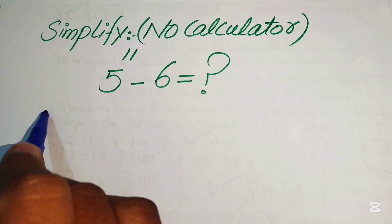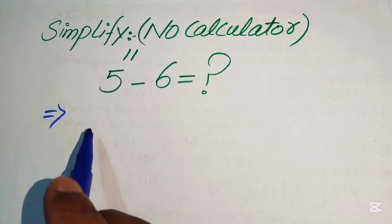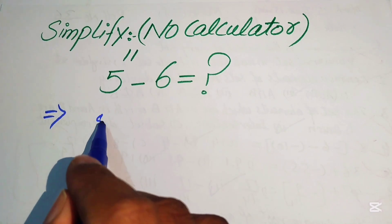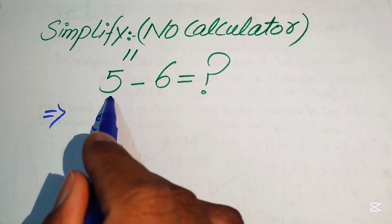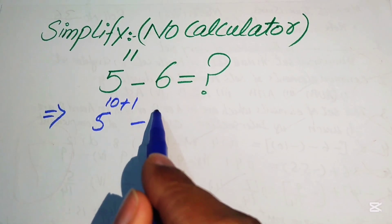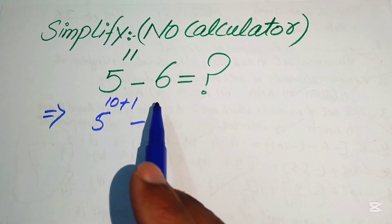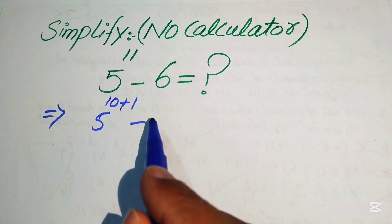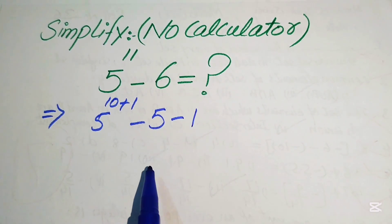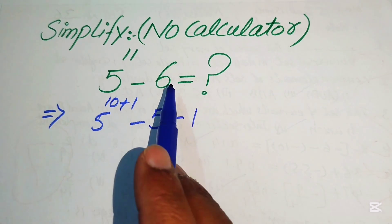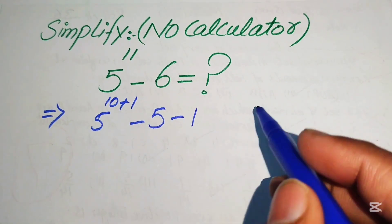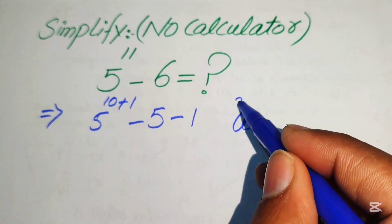The very first step is to rewrite the expression. We write 11 as 10 plus 1, so the exponent becomes 5 to the power of 10 plus 1. We write the 6 as 5 plus 1, so the subtracted term becomes minus 5 minus 1, which gives us back 6.